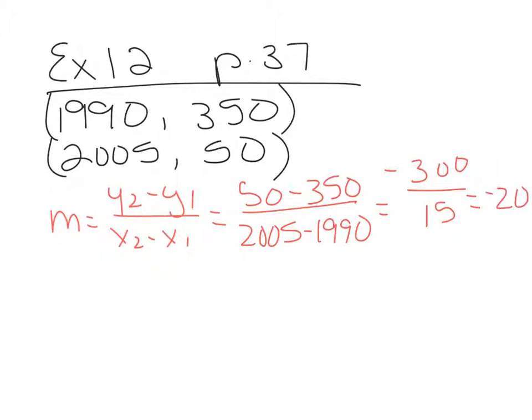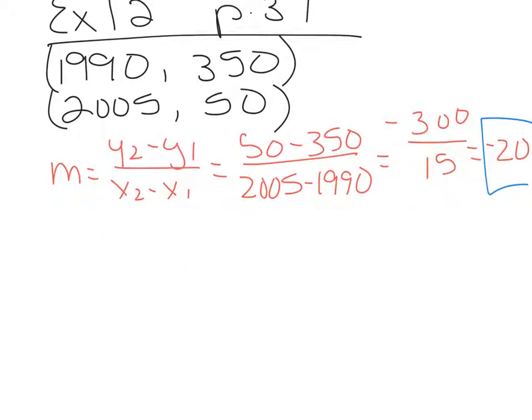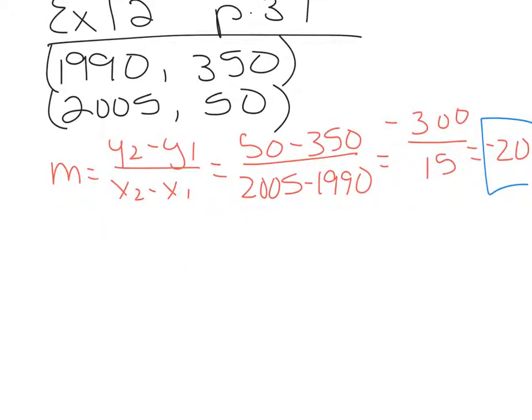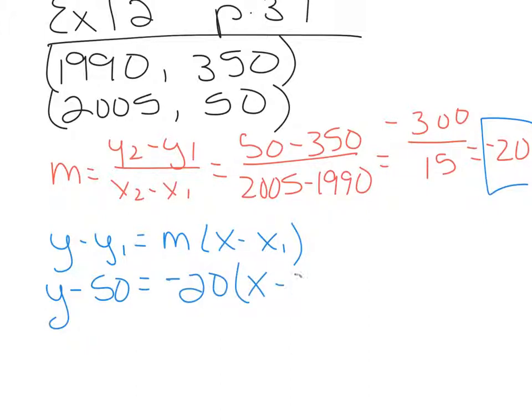So there's our slope for our line right there, negative 20. Then we're going to use the point-slope formula. It's going to be y minus y1 equals m times x minus x1. And you can use either one of these for x1. I actually think I'm going to use this bottom one because these numbers are a little bit easier than these numbers. So this is going to be x1 and y1 to substitute in here. And this is m, remember, from the slope formula. So that negative 20 is going to go there. All right. So y minus y1 will be y minus 50. m was negative 20. x minus x1 will be x minus 2005.